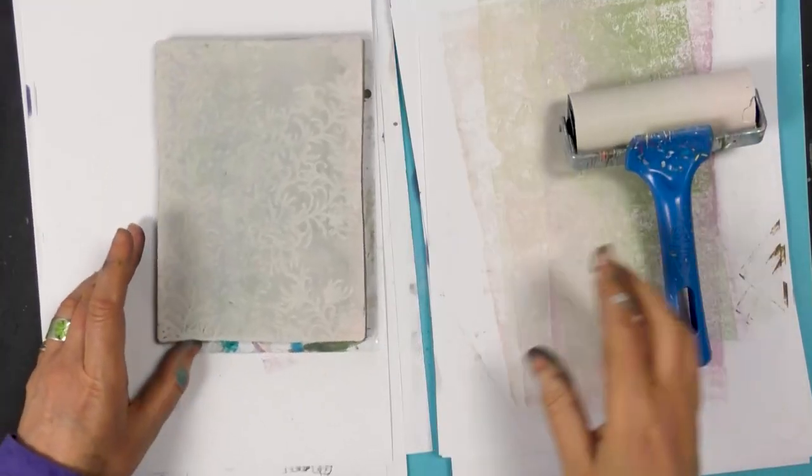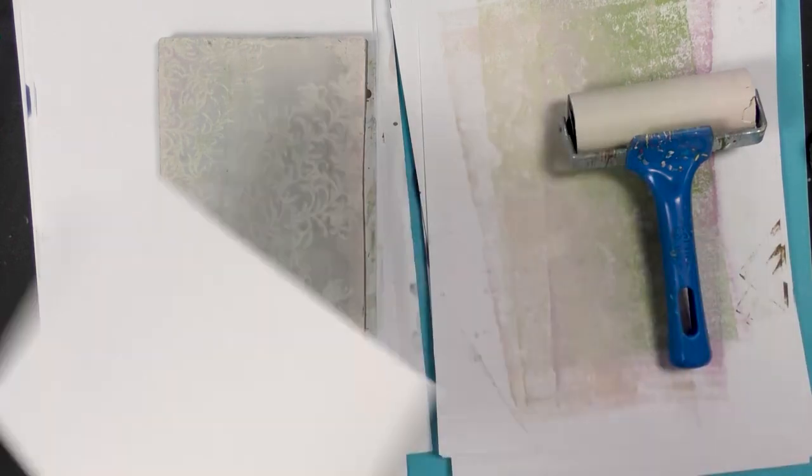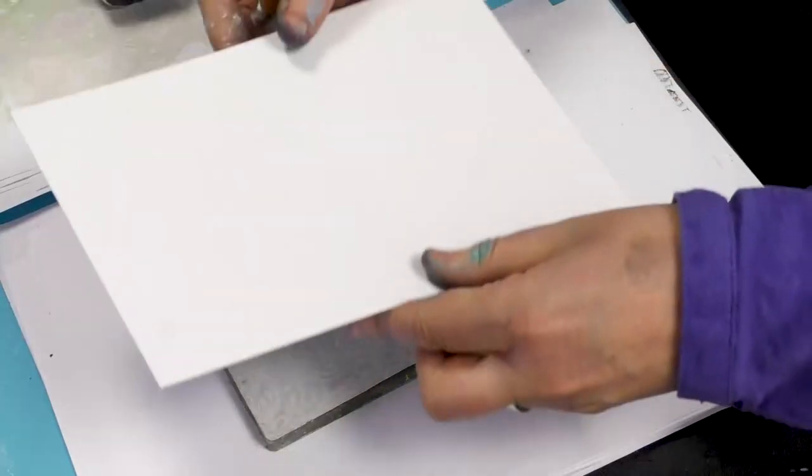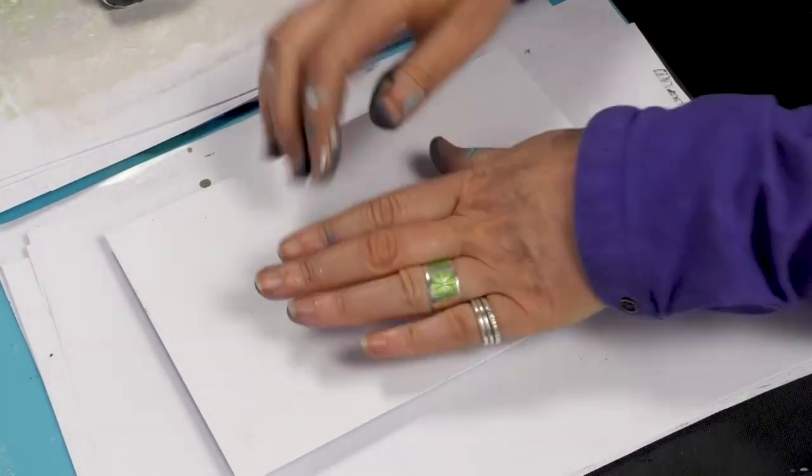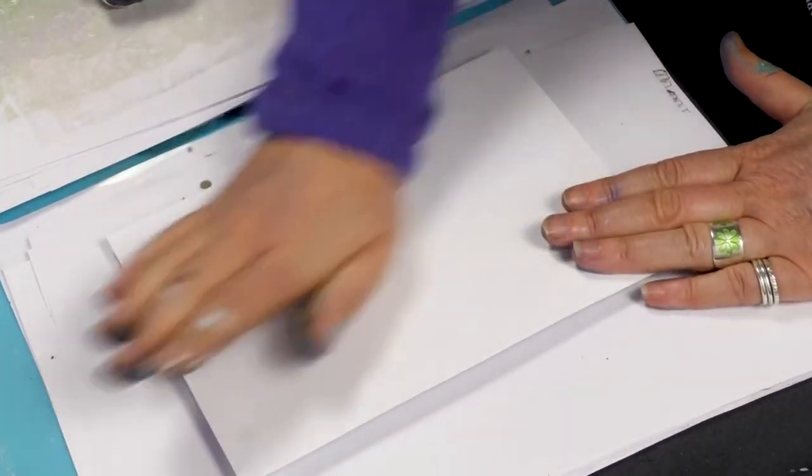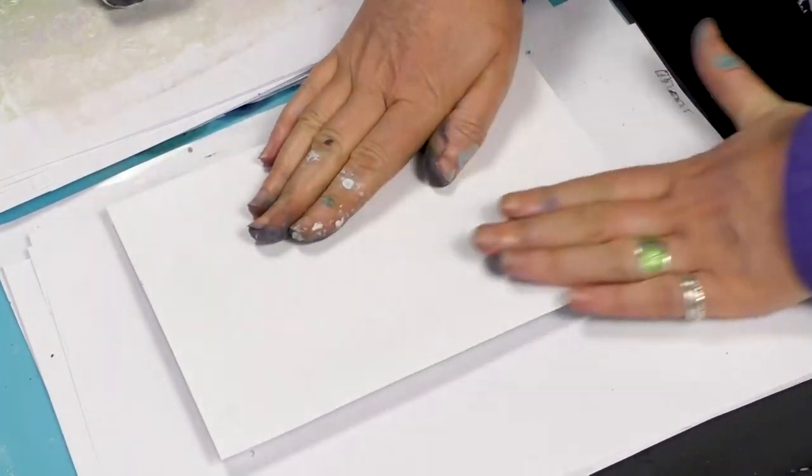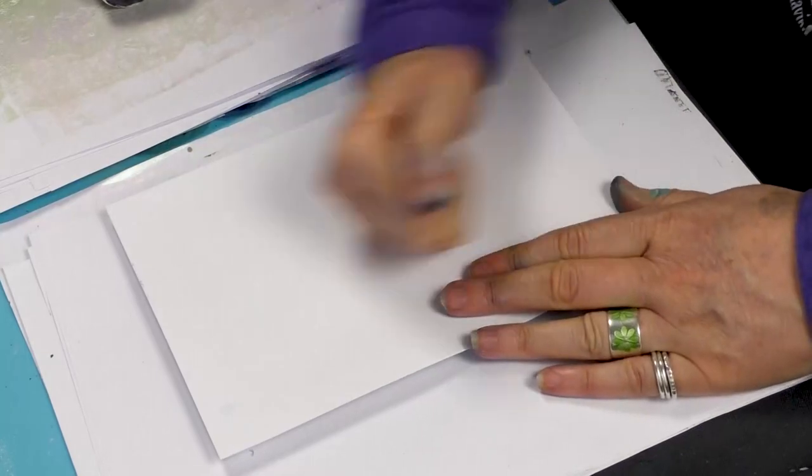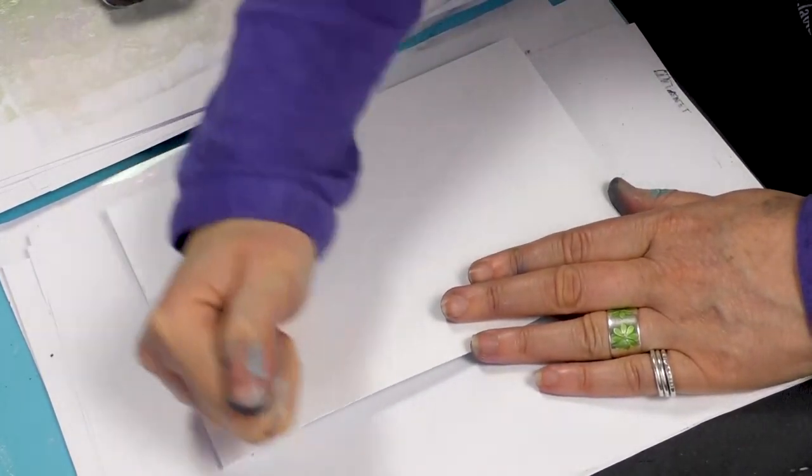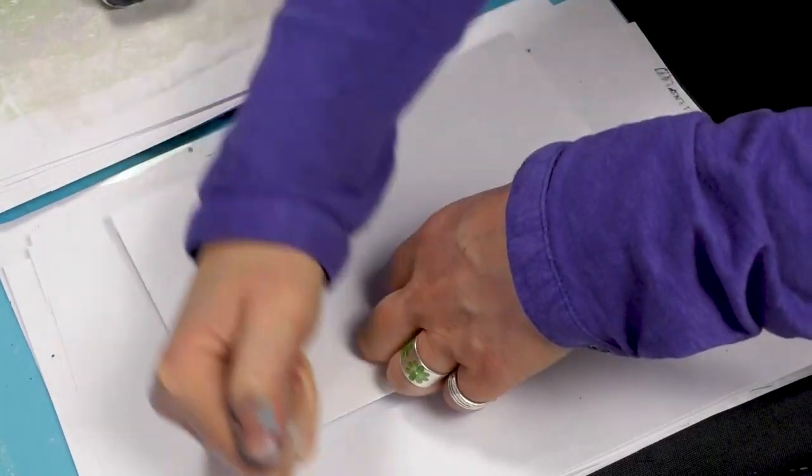Okay so you can see the stencil underneath, the image underneath come through and that tells me it's a nice thin layer so I'm ready to take that impression now. Give it a good firm press, make sure that that whole image comes off.